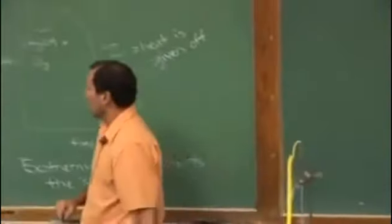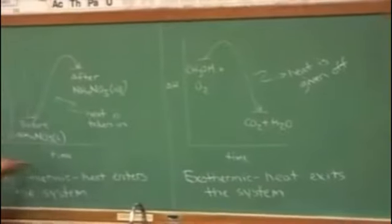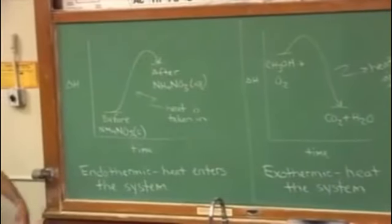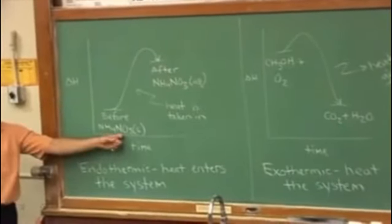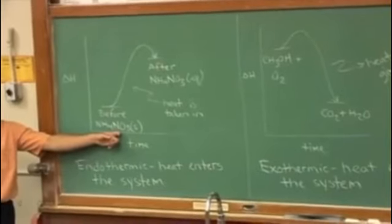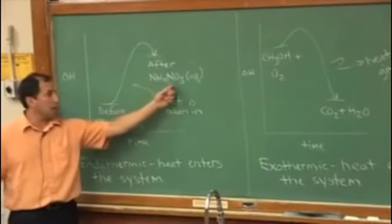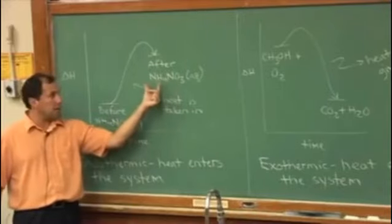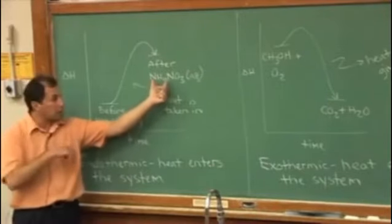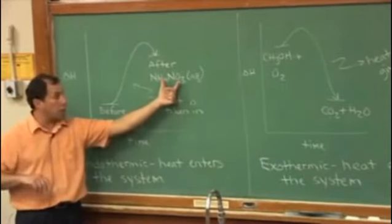Let me go ahead and show you the processes up here on the board. The left side is the first reaction and that is the cold pack reaction. The ammonium nitrate is a solid and it's mixed with water and becomes ammonium nitrate aqueous. So these are two separate ions. NH4 plus is floating around. NO3 minus is floating around in the water.